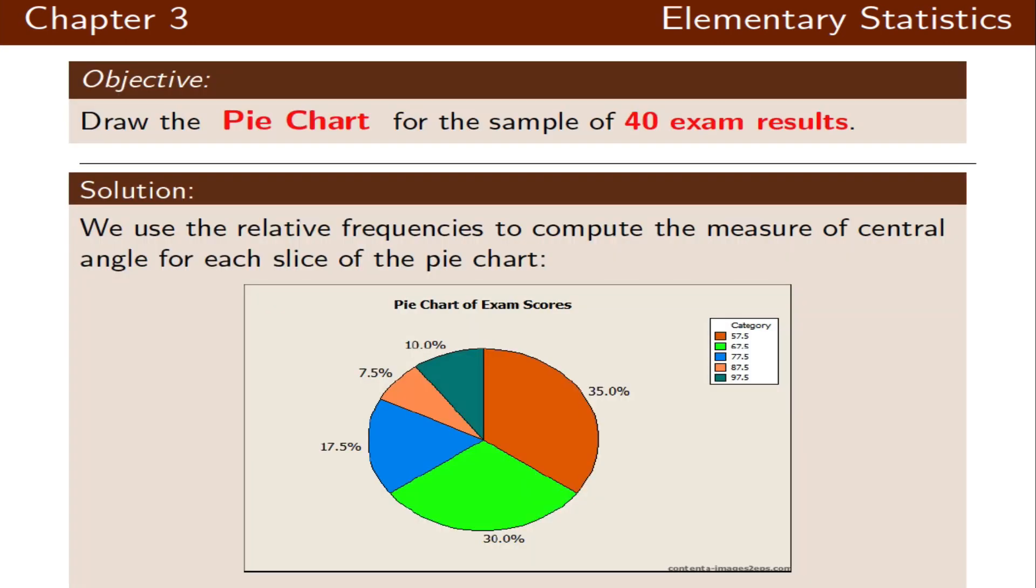In our frequency distribution table we had a class with 35 percent, 10 percent, 7.5 percent, 17.5 percent, and 30 percent. We use the 360 degrees around the circle and the relative frequency to figure out the size of each slice, then place the percentage of each class right next to the edge.